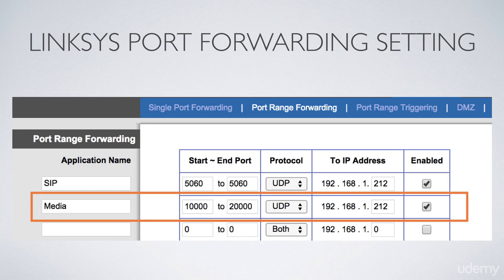Enable that with the checkbox and make sure to save your settings. That's all there is to it. Once you've set up the static IP address on your PBX appliance, you can do the port forwarding to force all that traffic to go to that static IP address you've created for your PBX appliance.